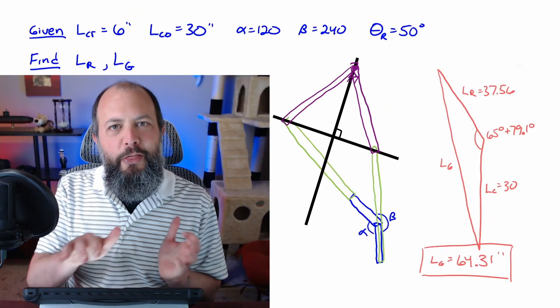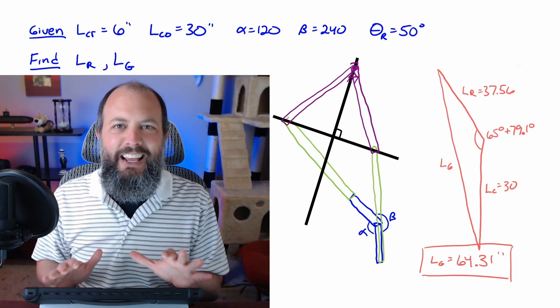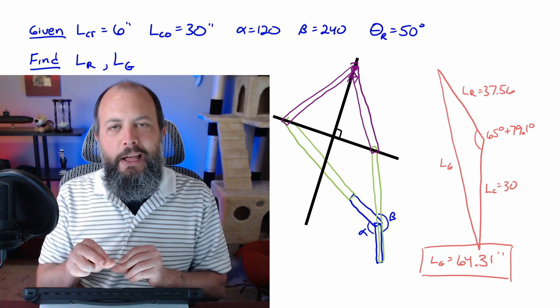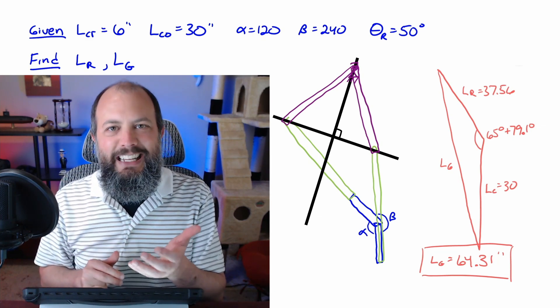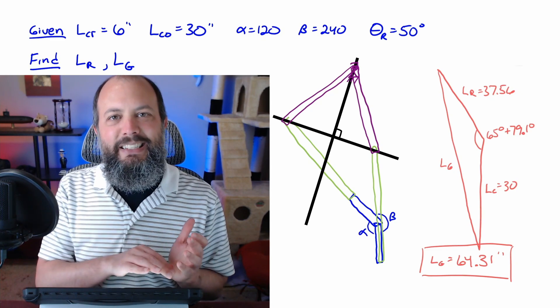If you had chosen the other rocker layout, the one that's more spread out, the first two triangles you draw would both be exactly the same. Your third triangle though would be a very tall and skinny triangle. And that interior angle, instead of subtracting 79.1 minus 65, you'd actually add those angles together and you end up with a ground length of about 65 inches.